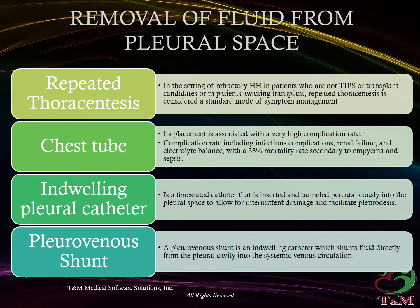An indwelling pleural catheter is a fenestrated catheter that is inserted and tunneled percutaneously into the pleural space to allow for intermittent drainage and facilitate pleurodesis. A pleurovenous shunt is an indwelling catheter which shunts fluid directly from the pleural cavity into the systemic venous circulation.